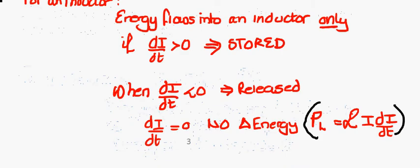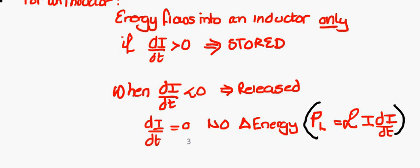This is not the case for an inductor. For an inductor, energy flows in only if our current is increasing with time, and energy is stored. When we change the derivative such that our current decreases with time, energy is released. And if we have a steady case, there's no energy.